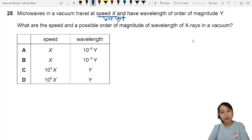What are the speed and possible order of magnitude of X-rays in a vacuum? So you are comparing microwaves and X-rays. They are both electromagnetic waves at the speed of light, right?